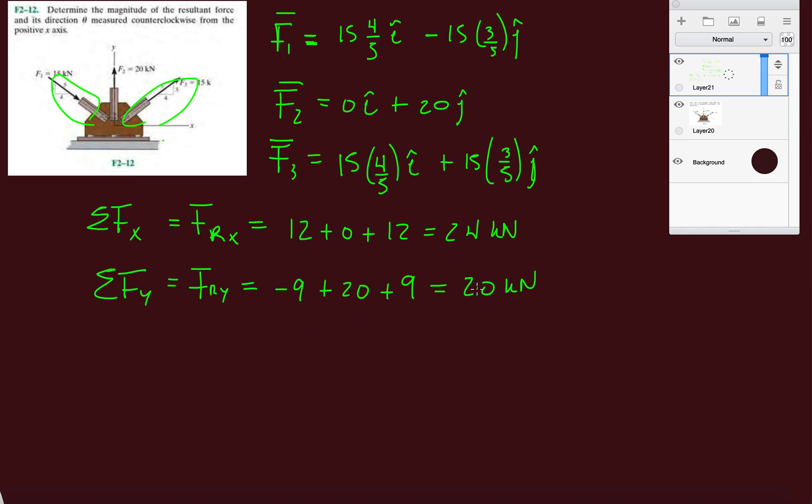And then we got our resultant in the X and Y as 24 and 20. So if we were to write this down, FR, it'll be 24i plus 20j, and then the resultant of this magnitude will be 24 squared plus 20 squared. Remember, Pythagorean theorem.